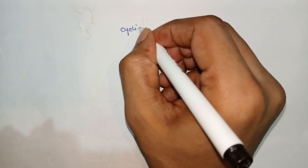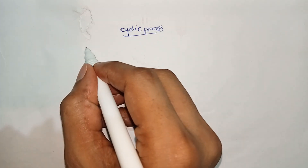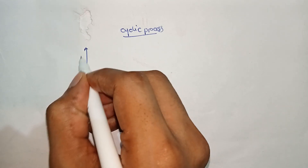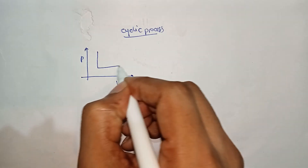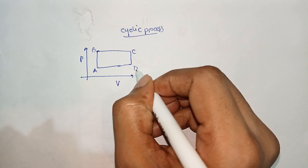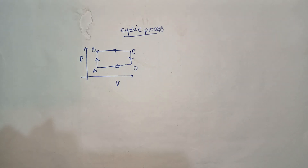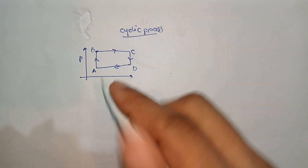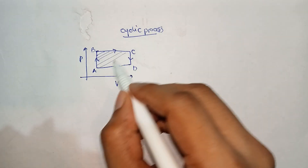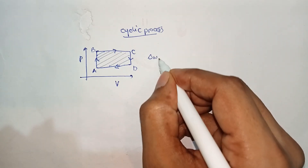Now we learn how to calculate work done in a cyclic process. Consider a PV diagram with a cycle ABCD. The area inside the cyclic process on the PV diagram gives the total work done of that cycle.